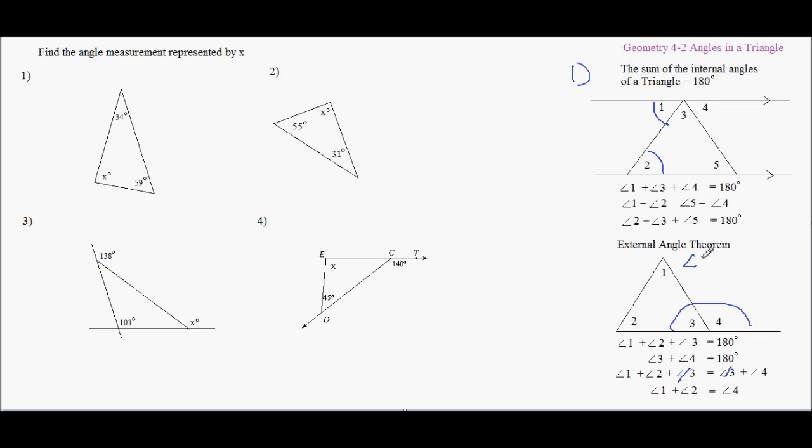And we get angle 1 plus 2 is equal to angle 4. So the external angle theorem says angle 1 plus angle 2 equals angle 4, or the measurement. The measurement of these two angles added together equals the external angle. The external angle is just the angle formed by the extension of a side. This is the external angle, the extension of the side to the other side.